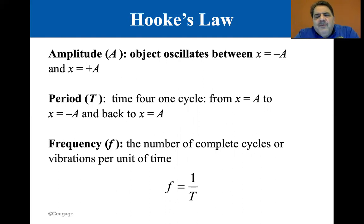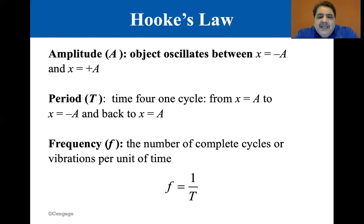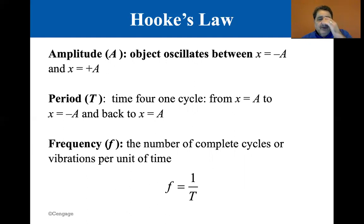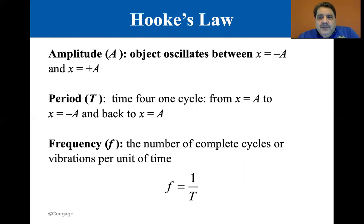The period is the time for one cycle — from X equals A, to X equals minus A, and back to X equals A. So if we pull the block back to position A and let it go, a cycle is all the way in, it pushes back out, and back to A. The frequency is the number of complete cycles of vibration per unit of time — frequency is the inverse of the period.